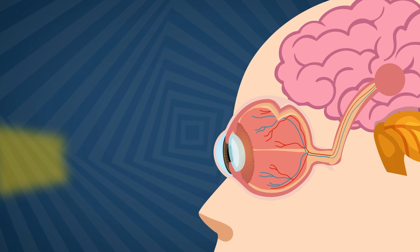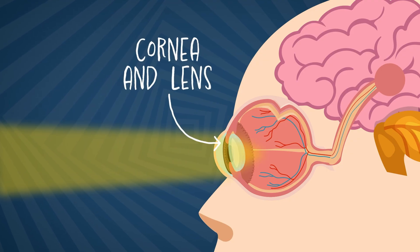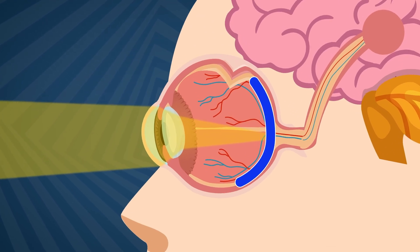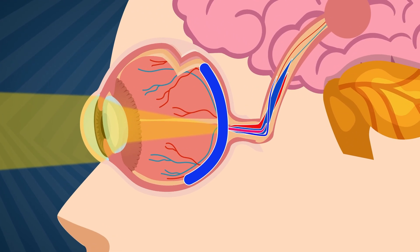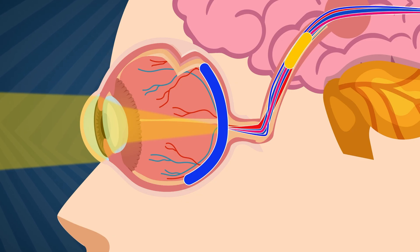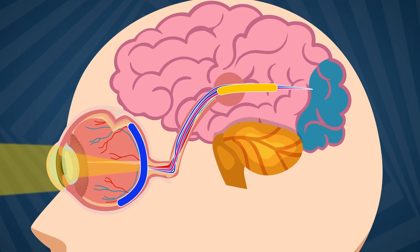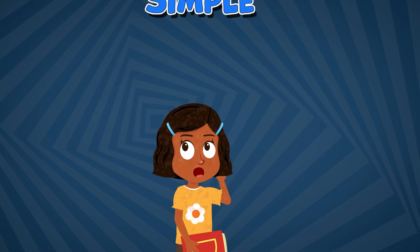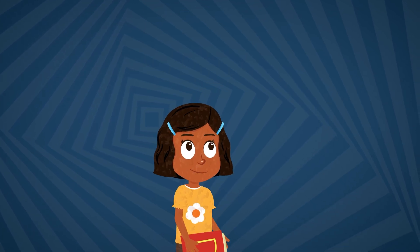First, Emma delves into the basics. Light enters the eye through the cornea and lens, and hits the retina at the back. The retina is like a screen that captures the light and sends signals to the brain, which interprets them as images. Simple, right? But that's where the simplicity ends.